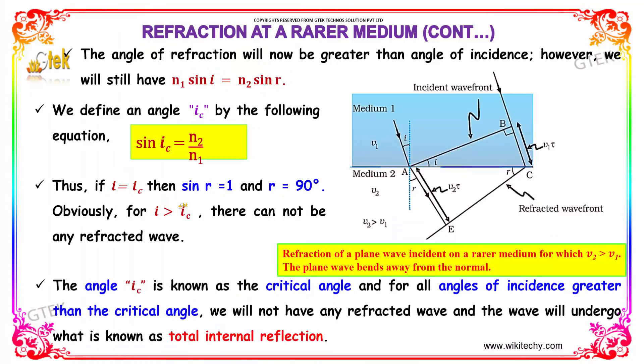The angle of refraction will now be greater than the angle of incidence. However, we still have N1 sin i equals N2 sin r. We define an angle ic by the following equation: sin ic equals N2 divided by N1.